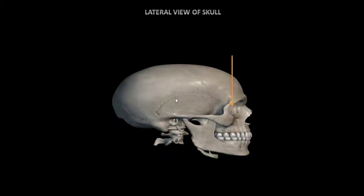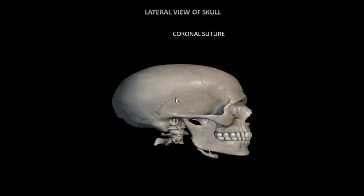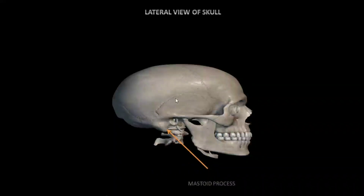The next bone is ethmoid bone, which lies between the nasal and cranial cavities. Yehi se hamaari olfactory nerves — means jo sense of smell hoti hai — woh pass hoti hai (our olfactory nerves, which carry the sense of smell, pass through here). The coronal suture joins the frontal and parietal bones. The squamous suture articulates the parietal bones with the temporal bone. The mastoid process is located in the posterior portion of the temporal bone.